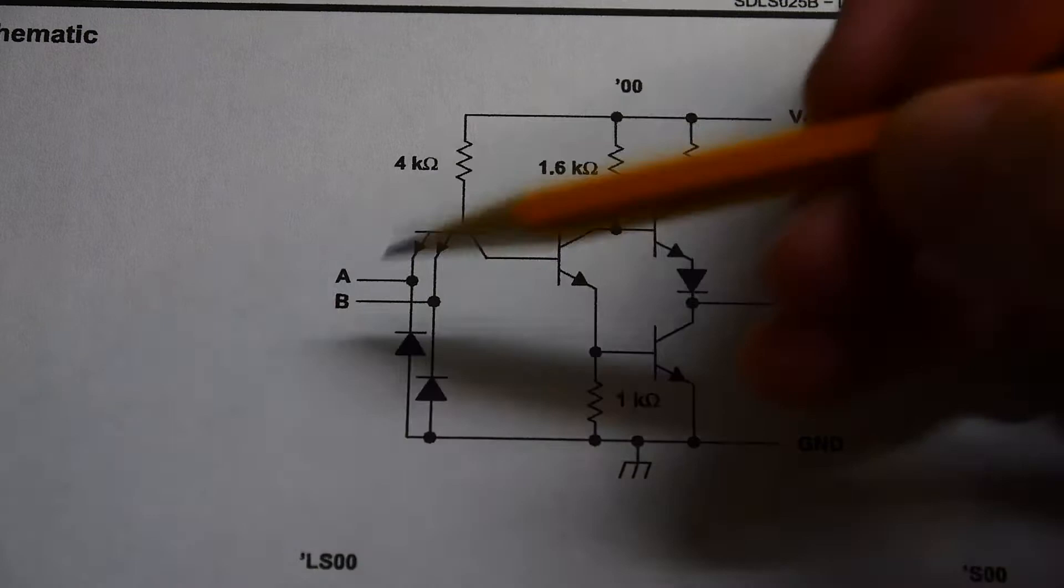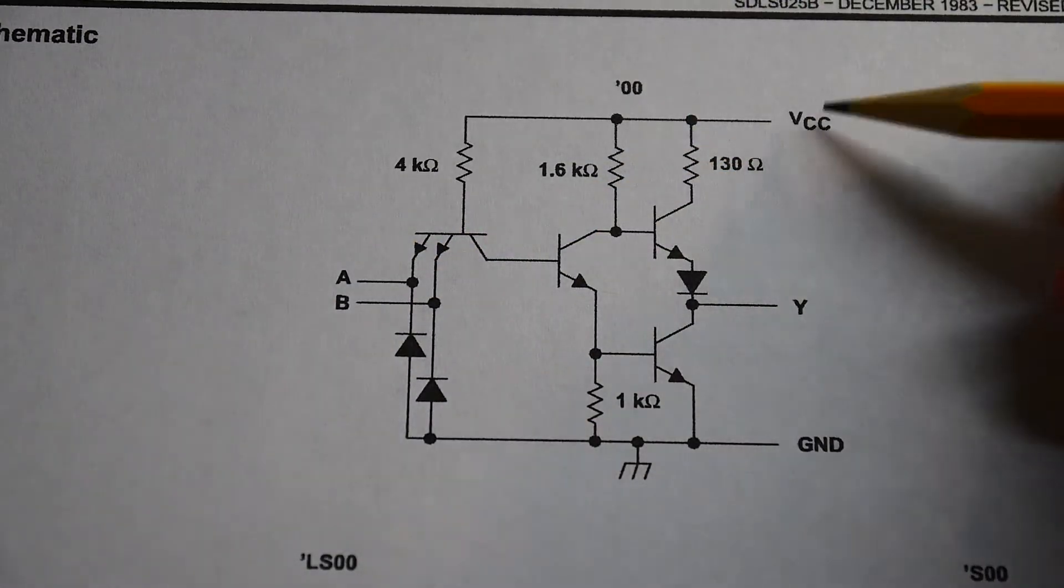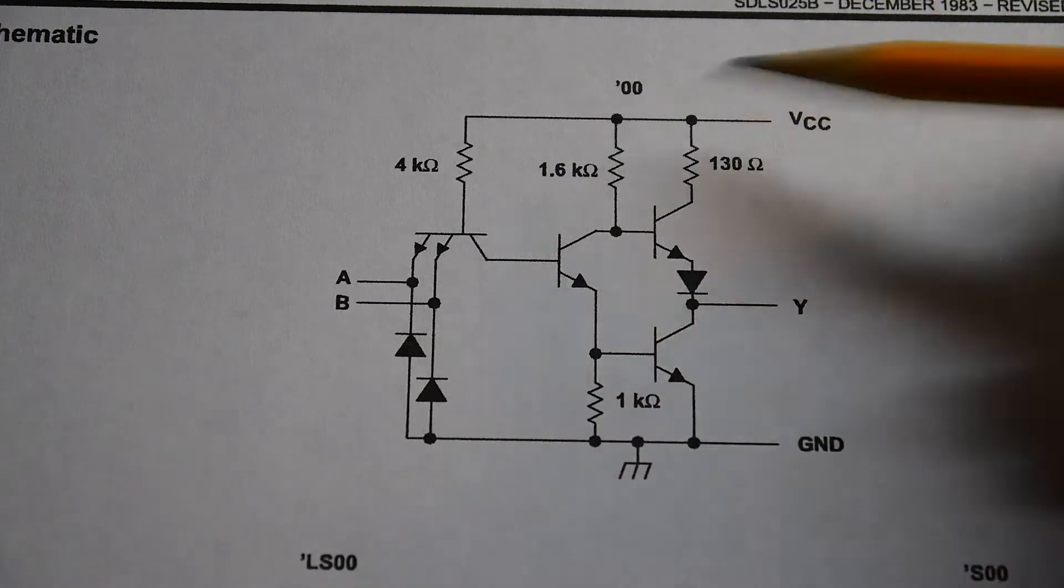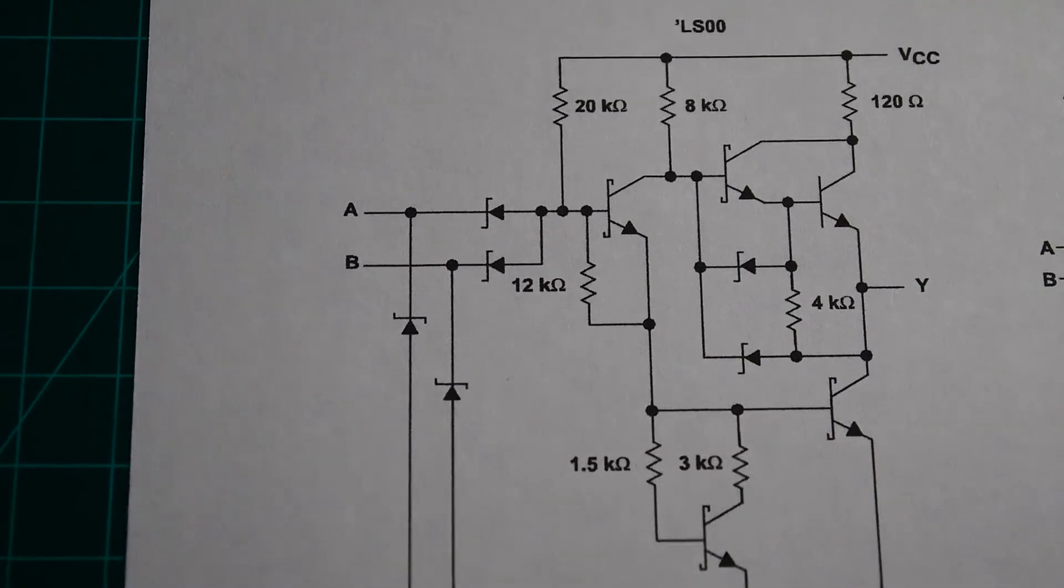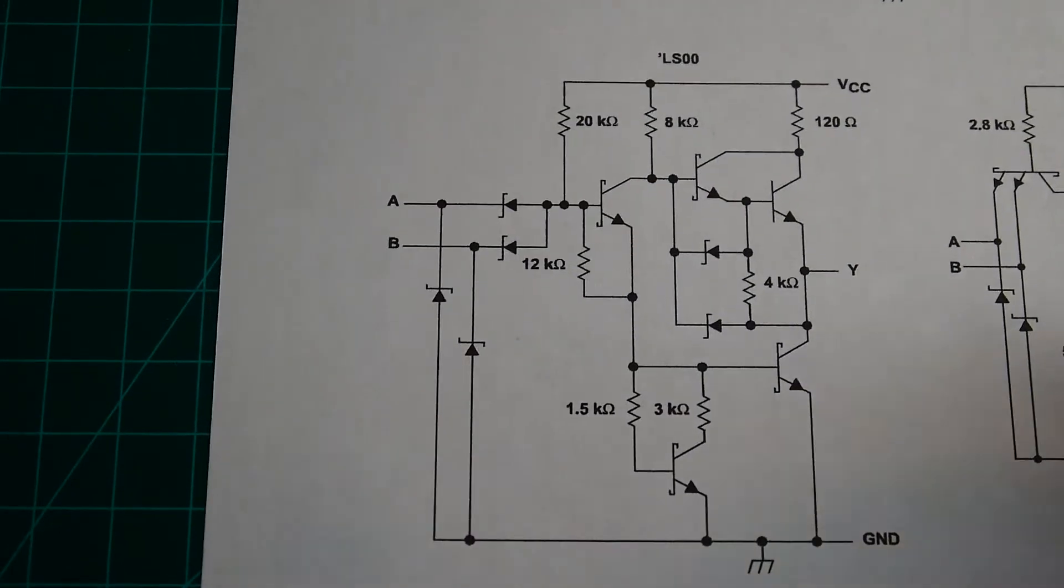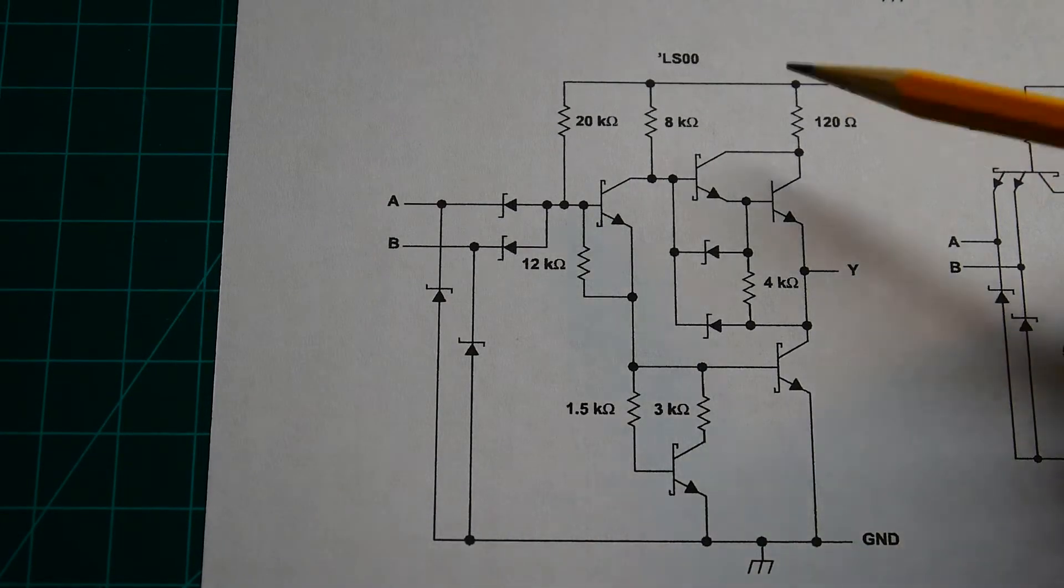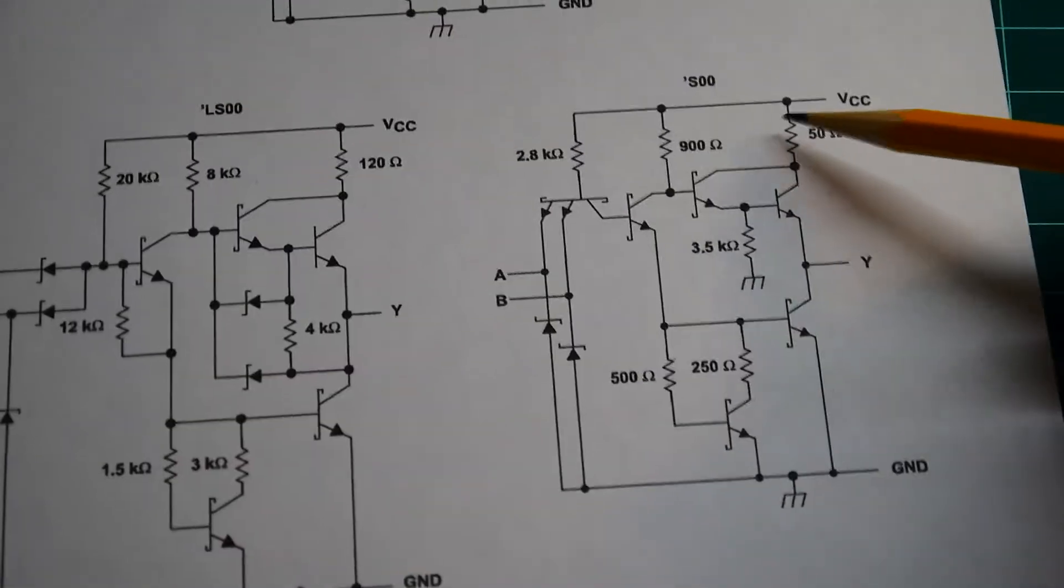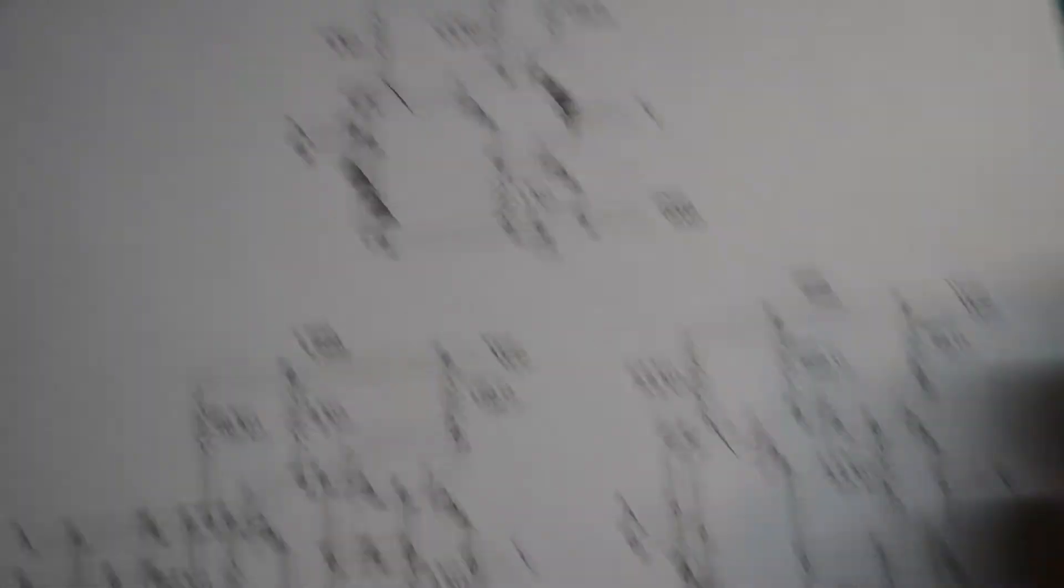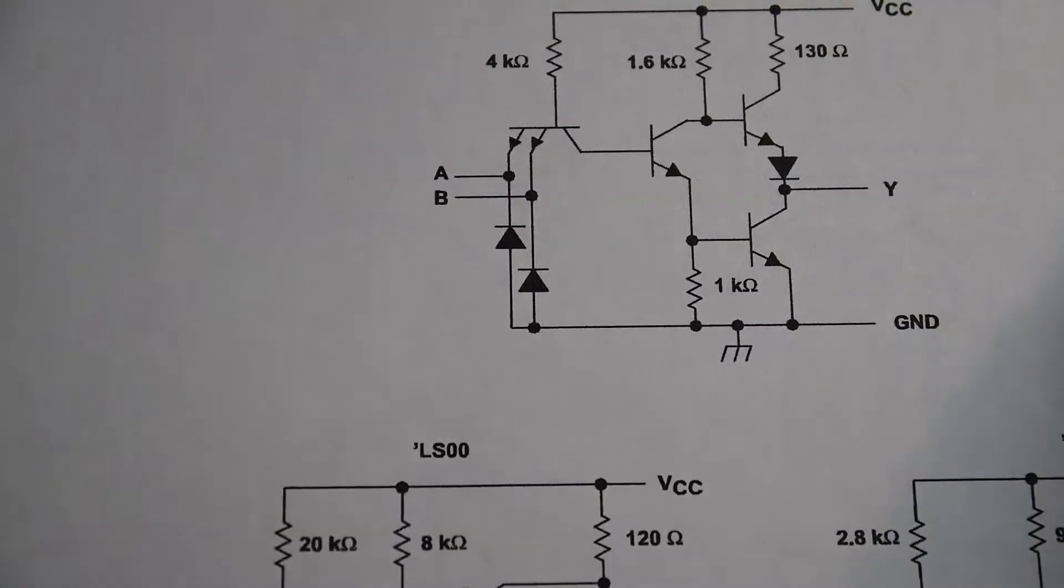So we have three circuits here. This is the NAND gate with the A and B inputs and the Y output of VCC and ground. This is for a standard TTL version. This is the schematic for the LS version, and this is the schematic for the Schottky version. So let's go back to the first one here and let's see what's going on.